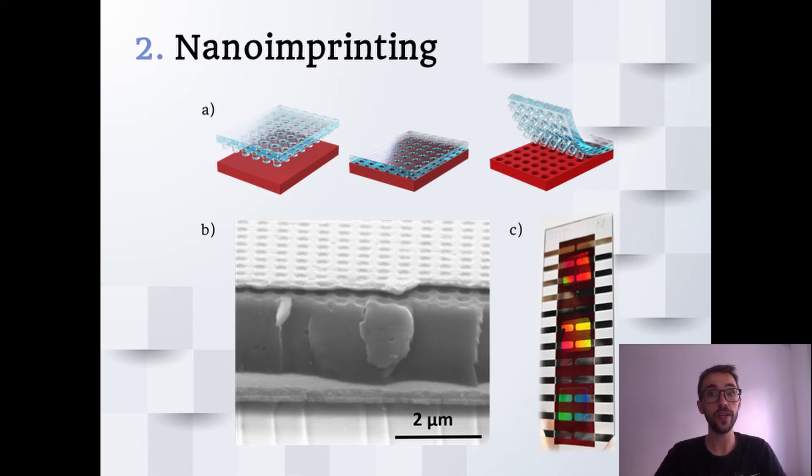To do so, we nanostructured the active layer and then evaporated the back electrode onto the nanostructured layer so that the nanostructure was also transferred to the back electrode. We did it with three different lattice parameters. That is why you see three different colors being diffracted on the final device, which shows iridescence.